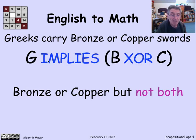We translate that into Greek implies B for bronze or C for copper, but this time we use the XOR. XOR means that one of them is true exactly, but not both and not neither.